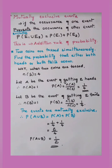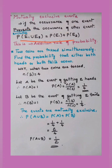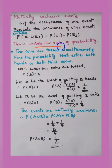Moving to mutually exclusive events: if the occurrence of one event prevents or excludes the occurrence of another event, then these are called mutually exclusive events. The formula is: P(E1 ∪ E2) = P(E1) + P(E2). This is also called the addition rule of probability. Questions based on the addition rule will be for descriptive type questions.